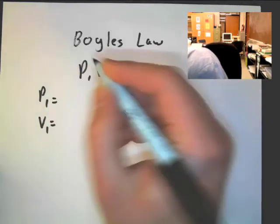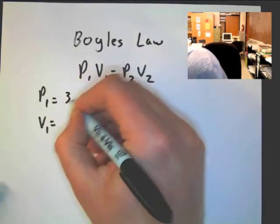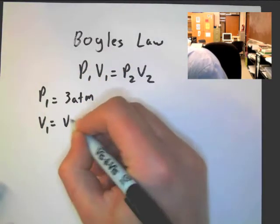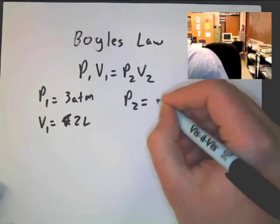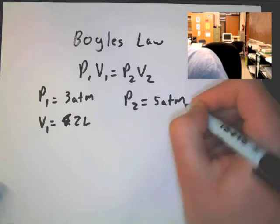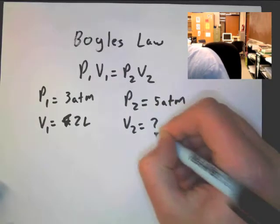Let's assume that our pressure 1 is 3 atmospheres. Our volume 1 is 2 liters. Our pressure 2 is equal to 5 atmospheres. And our volume 2 is what we are trying to solve for.